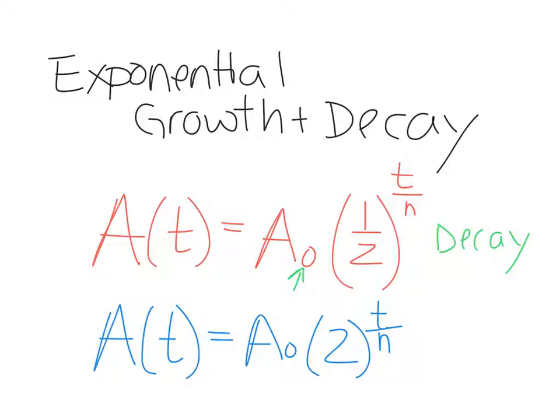And the next one, A of t equals A naught times two to the power of t over h is the equation for exponential growth.